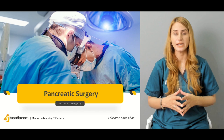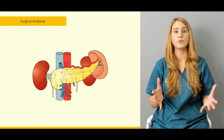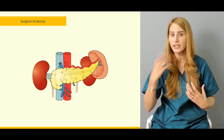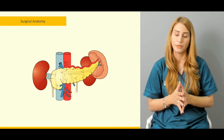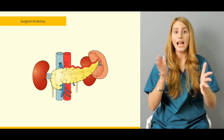Starting with surgical anatomy: the pancreas is a most important gland occupying the central part of the abdomen, which is the epigastrium. If a patient presents with epigastric pain associated with vomiting, you should think about the pancreas and its pathology, in addition to the stomach.